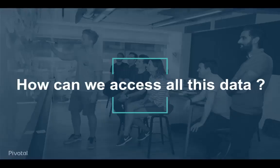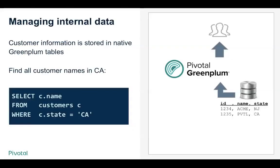The question becomes: how can we access all this data from a single tool in one place? Can Greenplum be leveraged to get information from all these data sources and provide a consistent view? Let's consider a few use cases. The first is simple: we want to build a report on data stored within Greenplum itself. We manage customer information in a Greenplum table called customers and want to find all customer names located in California. We write a simple SQL query, Greenplum consults its internal storage, and produces the result set. It's simple, fast, and that's what Greenplum was built for.